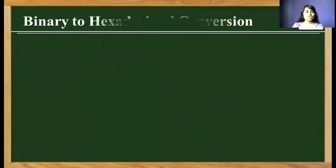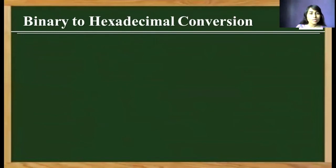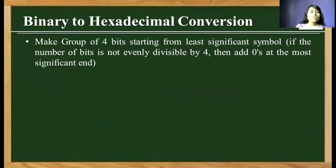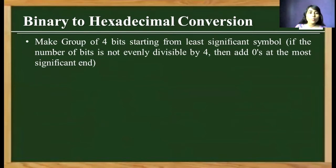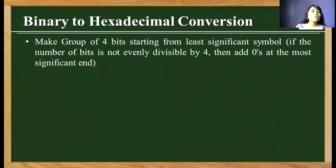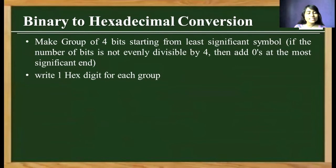Next is binary to hexadecimal conversion. To convert a binary number into a hexadecimal number, we have to make a group of 4 bits from the least significant bits. Why a group of 4? Because binary has a base of 2 and hexadecimal has a base of 16, and 16 is equivalent to 2 to the power of 4. So we make groups of 4 bits.